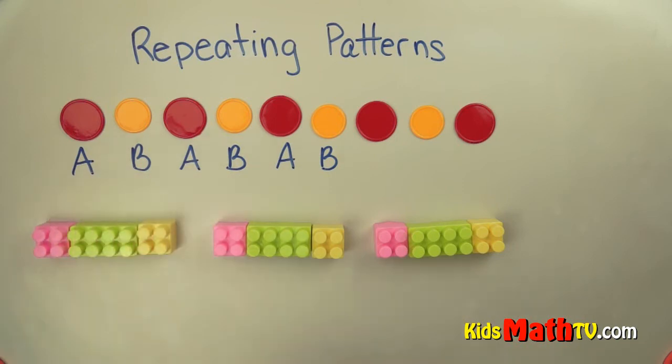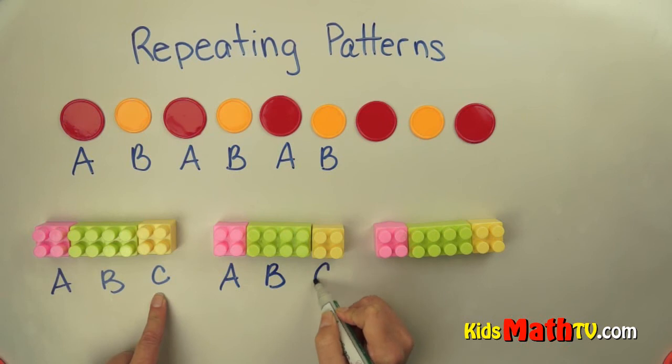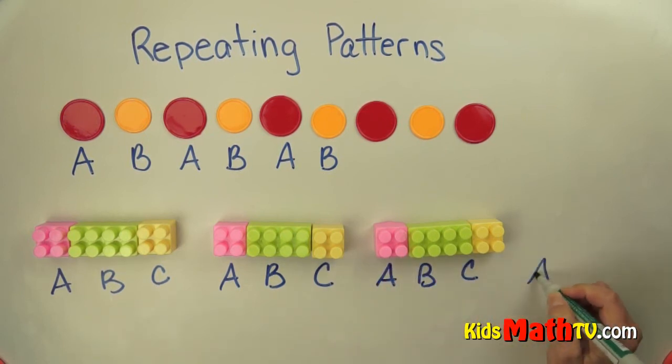The first and then the second. This one is called an A-B-C pattern because there are three parts. Then A comes next, then B, then C, and so on. A-B-C. And we could continue that: A-B-C.